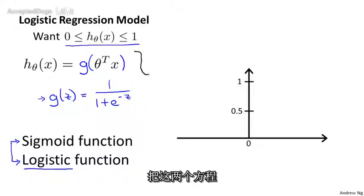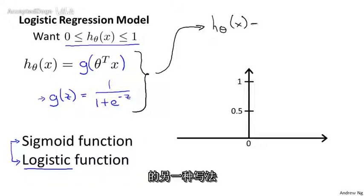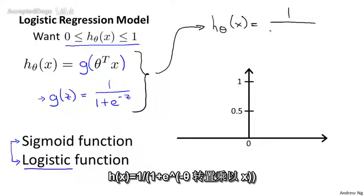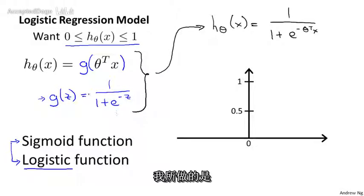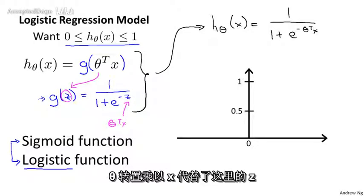And if we take these two equations and put them together, then here's an alternative way of writing out the form of my hypothesis. I'm saying that h of x is 1 over 1 plus e to the negative theta transpose x. And all I've done is I've taken this variable z, z here as a real number, and plugged in theta transpose x. So I end up with theta transpose x in place of z there.